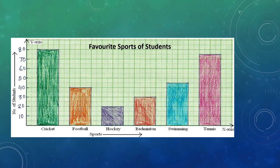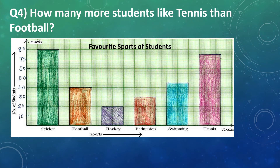Now, let's do question number 4: How many more students like tennis than football? Here, we can see that the height of the bar for tennis reaches up to the scale of 75, which is between 70 and 80. And the height of the bar for football reaches up to the scale of 40. So, we will subtract 40 from 75.